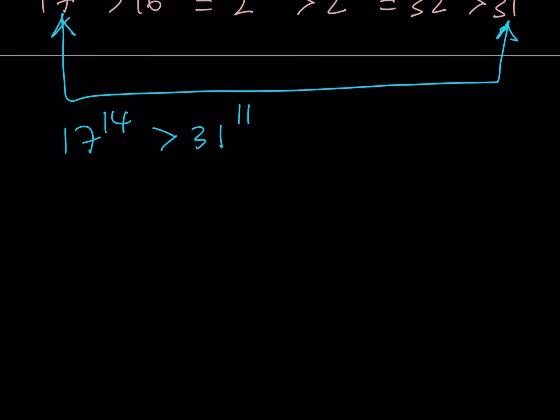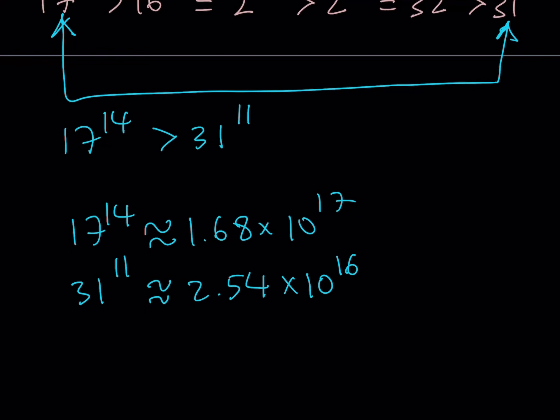So let's go ahead and wrap it up. 17 to the 14th power is basically, I mean, I should say approximately in this case because I'm going to give it in scientific notation. It's about 1.68 times 10 to the power of 17. And 31 to the 11th power is approximately 2.54 times 10 to the 16th power. As you can see, they're not that apart. They're pretty close. Well, depends. I guess that's relative.